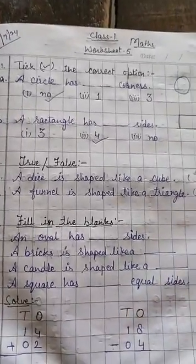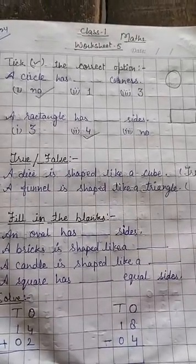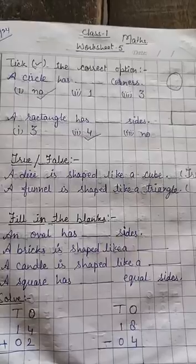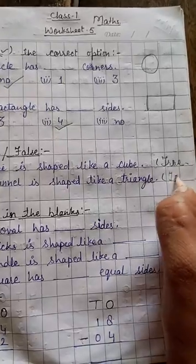And next one is, a funnel. Funnel is shaped like a triangle. No, this shape is like a cone. So that will be false.